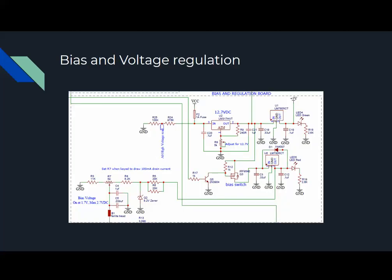Bias and voltage regulation ended up using an LM317 high voltage to bring the 48 to 50 volts down to 12 volts, and then two 7805 regulators, one being switched on and off to control the bias.